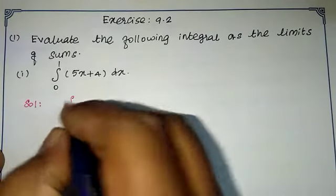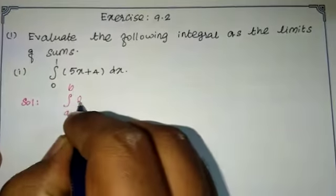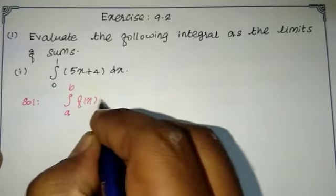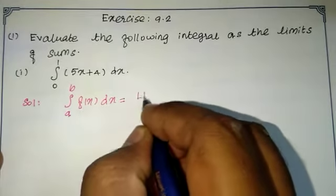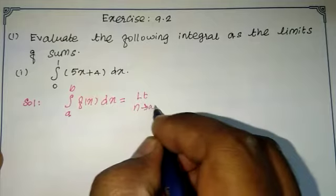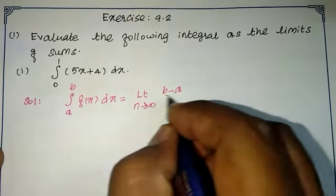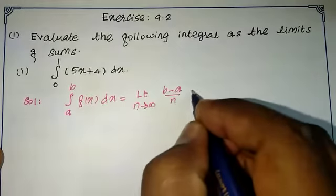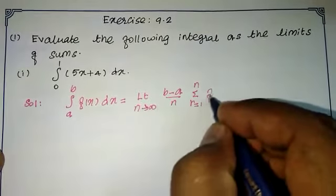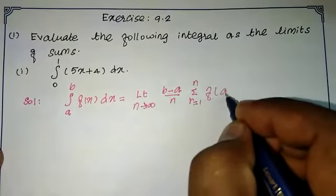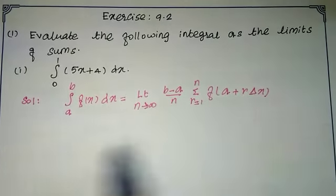Using Formula 3: the integral from a to b of f(x) dx equals limit n tends to infinity of (b minus a) by n, times summation r equal to 1 to n of f(a plus r times delta x).